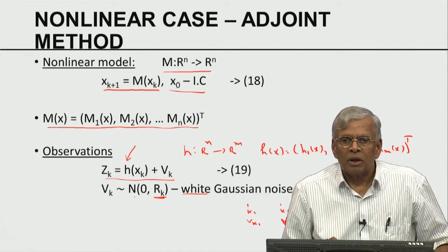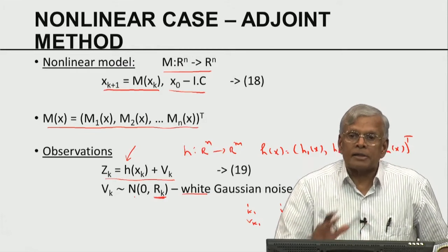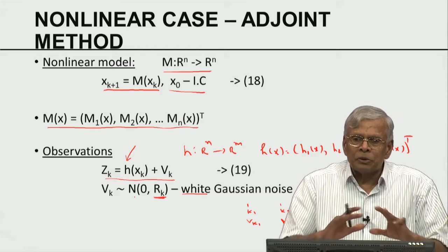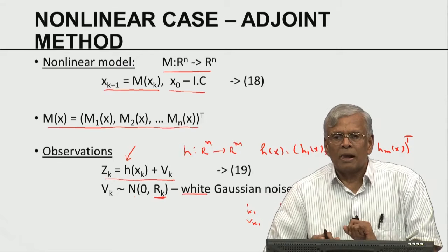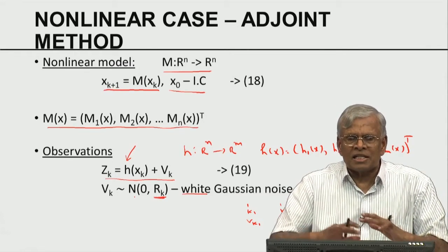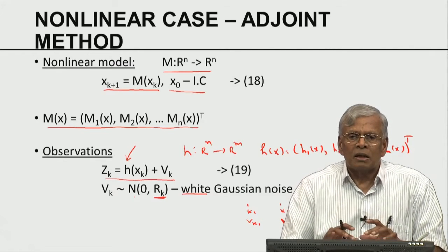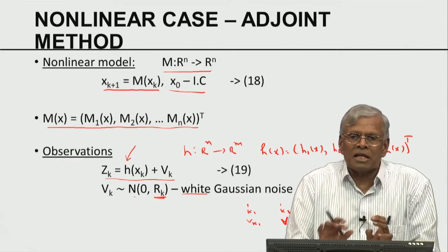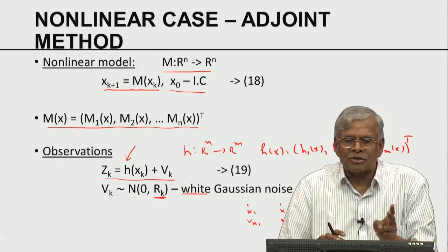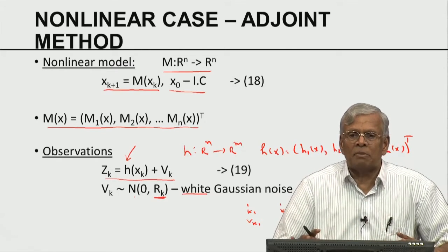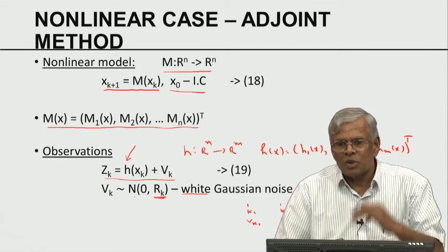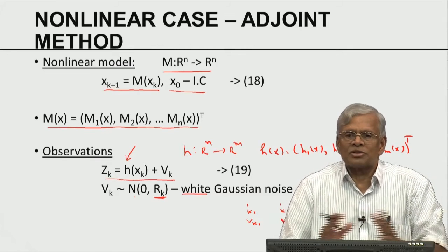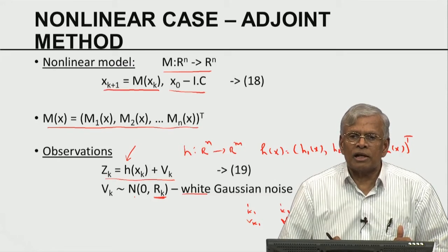These are the standard assumptions. If the observations are temporally correlated, the analysis becomes much more complex. In modeling, the trick is to make all necessary assumptions to make the problem interesting but not too complex. If you analyze the standard versions of the problem, you get a feel for the solution, after which you can explore the impact of additional assumptions — such as what happens if the observation noise is serially correlated.